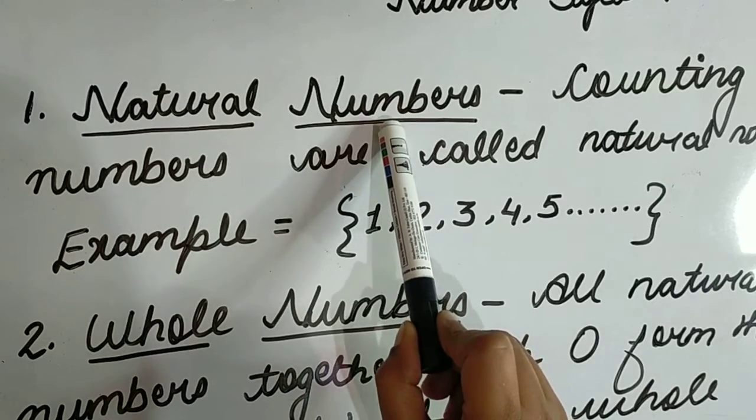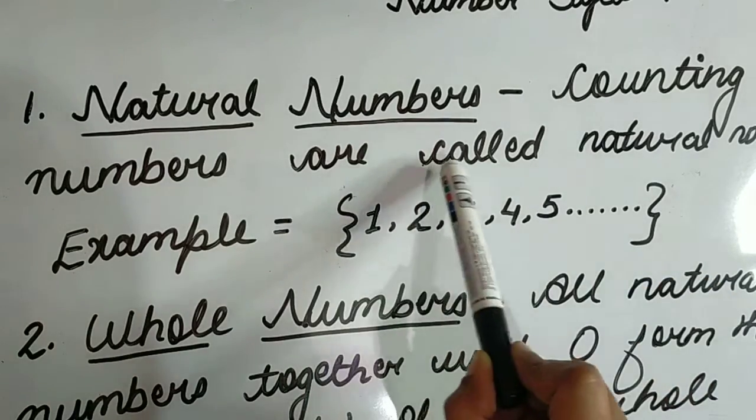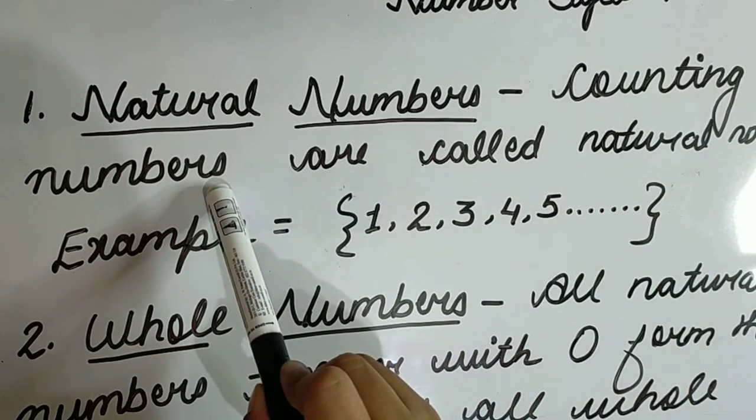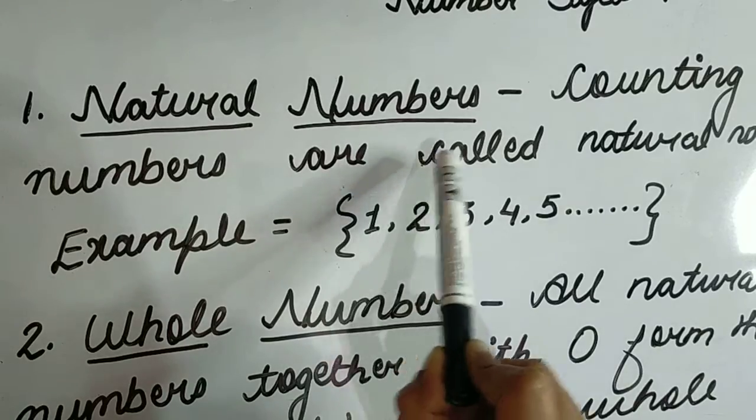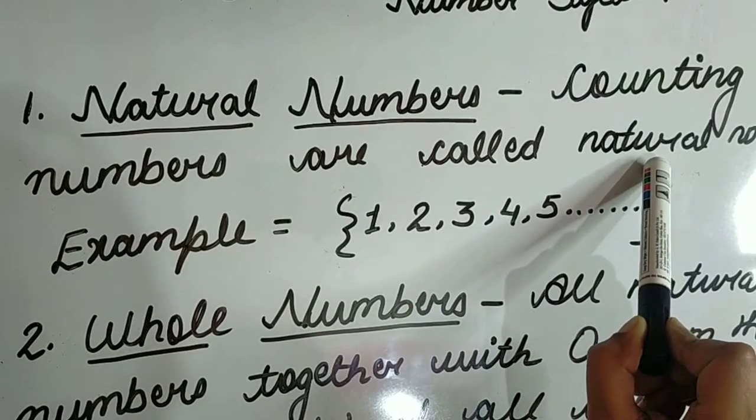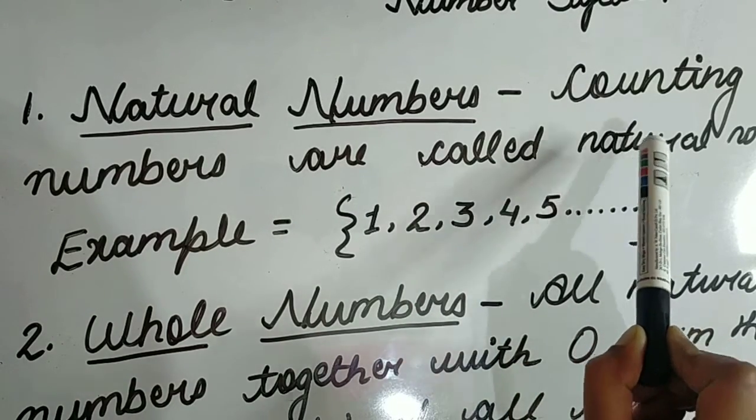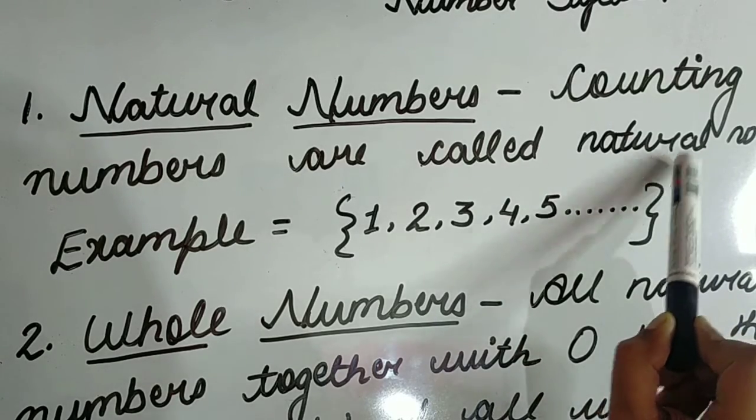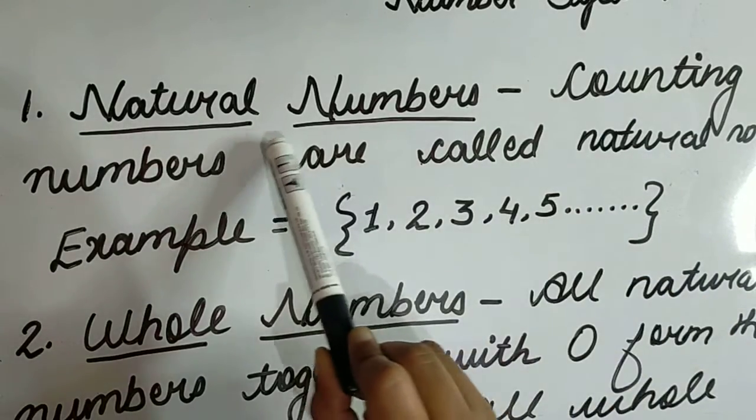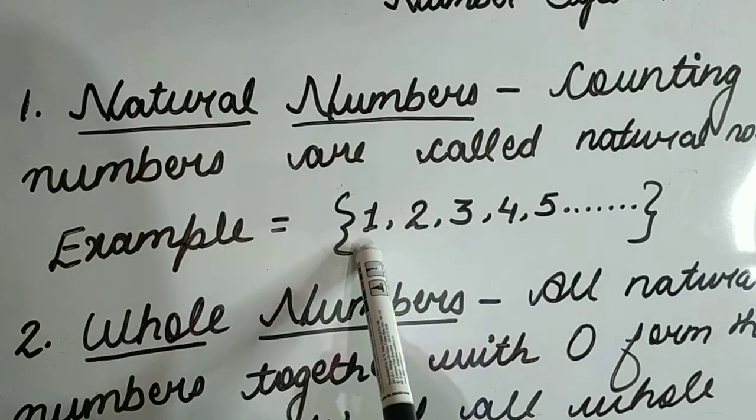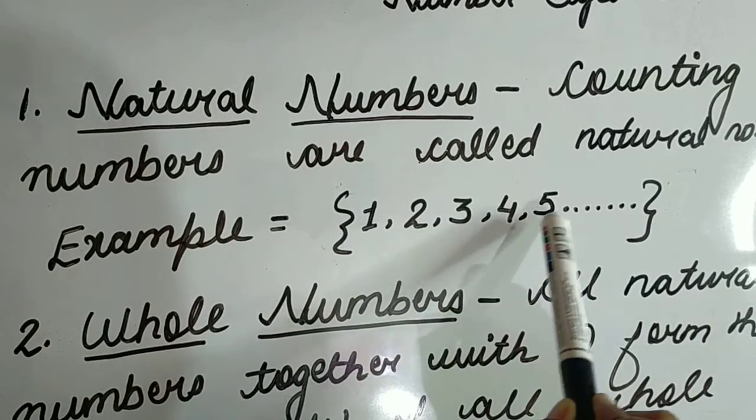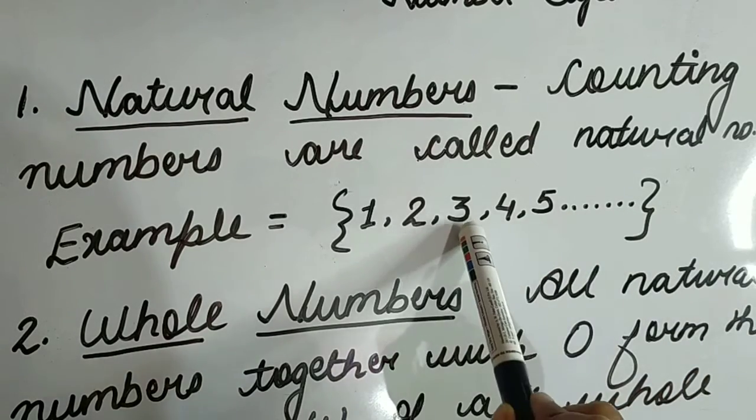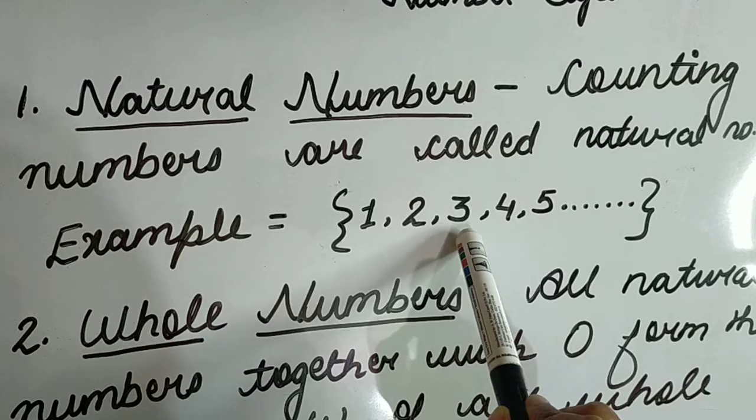Natural numbers are counting numbers. The numbers you can count, they are called natural numbers. Examples: 1, 2, 3, 4, 5, and so on up to infinite. All counting numbers are natural numbers.